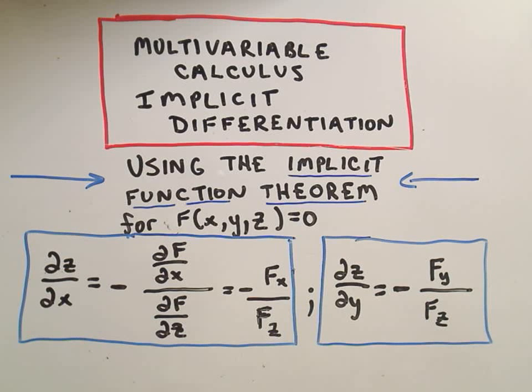In this video I'm going to use what's called the Implicit Function Theorem to find a partial derivative, the partial of z with respect to x or the partial of z with respect to y. And you're going to use this when you have a function defined implicitly.